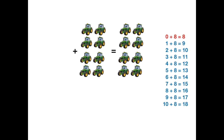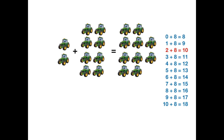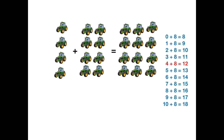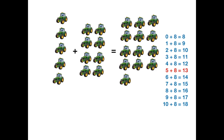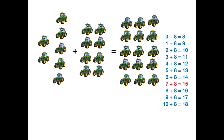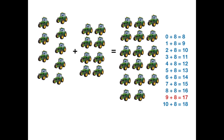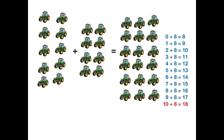Adding 8 to a number. 0 plus 8 equals 8. 1 plus 8 equals 9. 2 plus 8 equals 10. 3 plus 8 equals 11. 4 plus 8 equals 12. 5 plus 8 equals 13. 6 plus 8 equals 14. 7 plus 8 equals 15. 8 plus 8 equals 16. 9 plus 8 equals 17. 10 plus 8 equals 18. And we are all done.